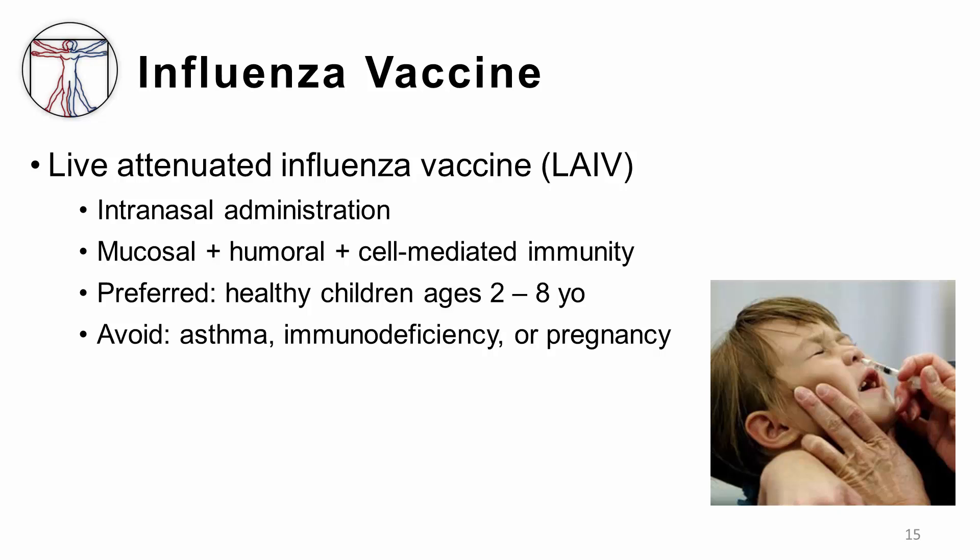There is also a live attenuated influenza vaccine administered as a nasal spray. This vaccine may induce a broader immune response, including mucosal immunity. The CDC now recommends that all healthy children between age two and eight receive the live attenuated vaccination where available, because young children do not have as robust an immune response to the flu shot compared to adults. However, because this vaccine is inhaled, it is generally avoided in patients with severe asthma, and because the vaccine contains a weakened but not killed virus, patients with impaired immune systems should avoid this vaccine. It is also avoided in pregnant women. Other examples of live attenuated viral vaccines include measles, mumps, and rubella; oral polio; rotavirus; yellow fever; and varicella vaccinations.